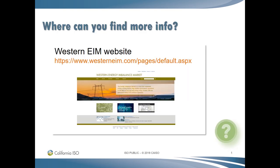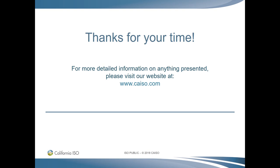With California in the vanguard of the transition to renewable energy, many around the world are tracking the ISO's innovation, technology, and strategies for greening the grid. Transparency and engagement are at the heart of the ISO mission to inform, educate, and promote the clean, reliable electric system and efficient market of the future. This concludes our presentation. Thanks for your time.